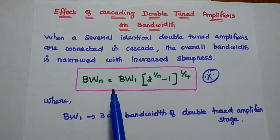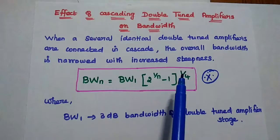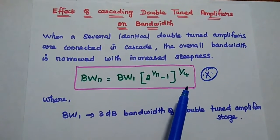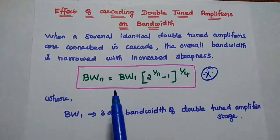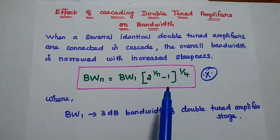BWN equals BW1 times 2 to the power 1 by N minus 1, the whole to the power 1 by 4. This is the formula for n-stage double tuned amplifiers. Here BW1 is the bandwidth of double tuned amplifier.